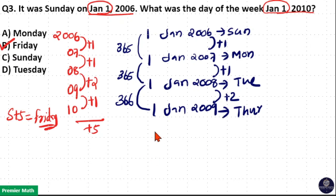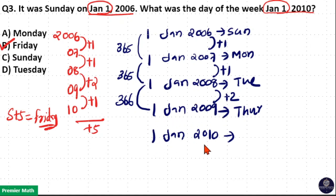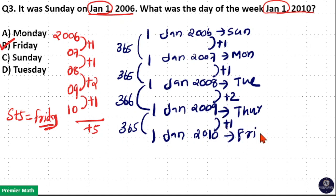Again, January 1, 2010: 2009 is a non-leap year which contains 365 days, plus the 1st day of 2010, counting to 366. The difference between these two is 365 days, which contains one odd day. So Thursday plus 1 gives you Friday. So this is the concept.